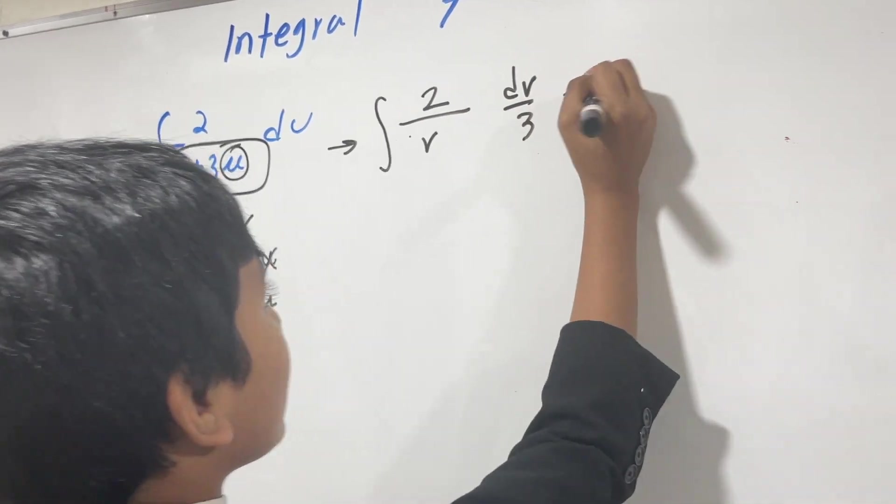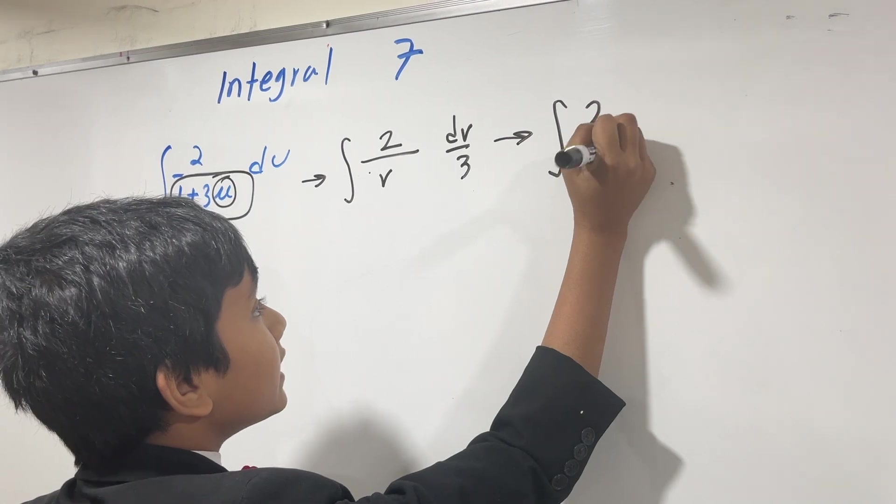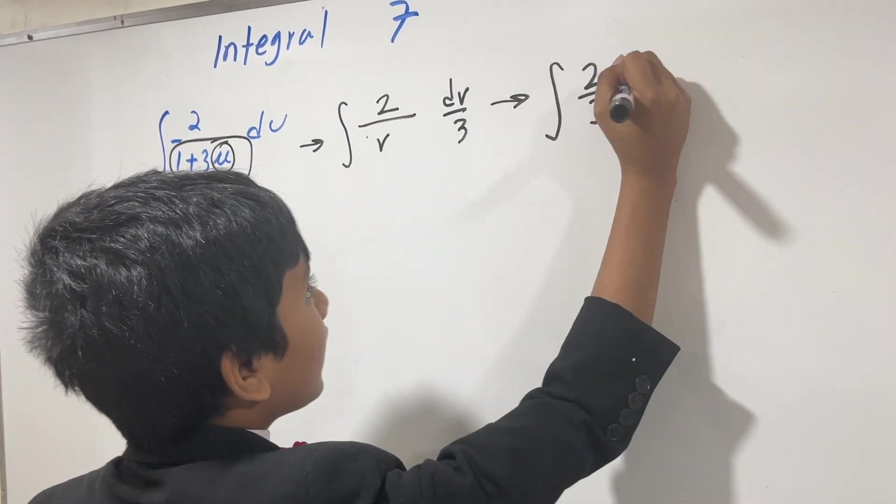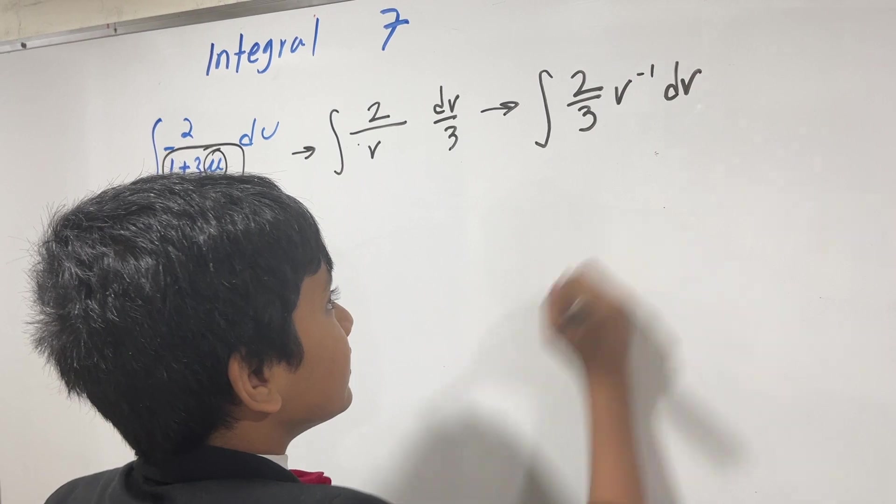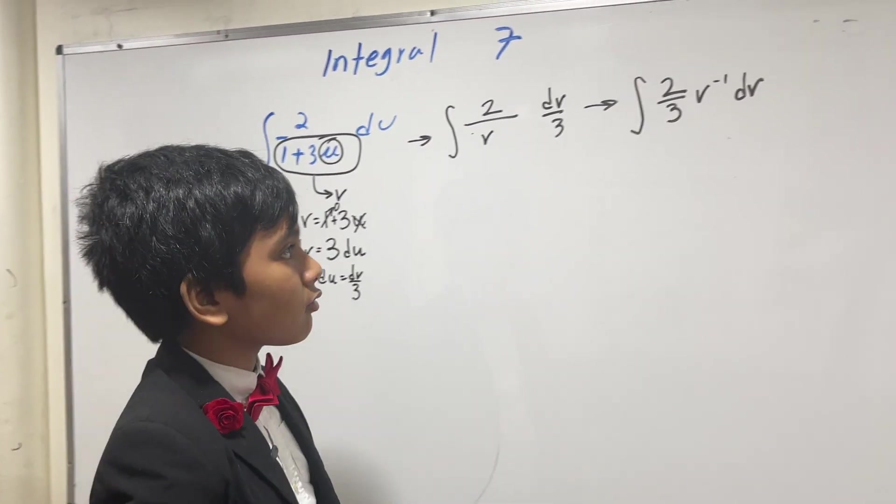That becomes the integral of 2 over 3, and we can actually bring this v up, v to the minus 1, dv. And now we use our reverse power rule.